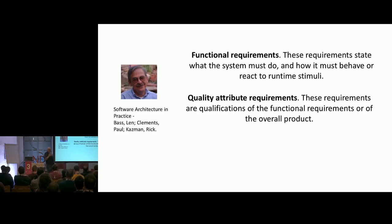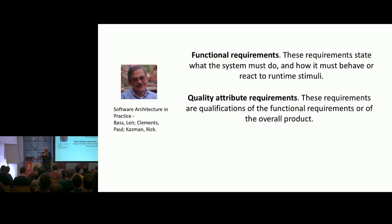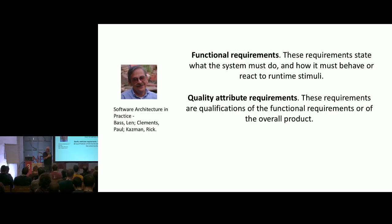He makes a distinction between functional requirements — what should the software do — and quality attributes: when it does what it needs to do, what are the trade-offs we are making in our design decisions? There are many ways to build a software solution to a given problem, and the question of which one is better is why people give you the 'it depends' answer.